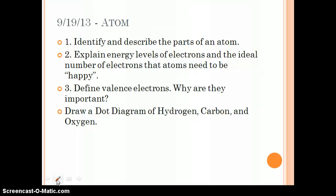Number two, explain energy levels of electrons and the ideal number of electrons that atoms need to be considered happy. And we're going to talk about what happy means for an atom. And then number three, define valence electrons. Why are they important?